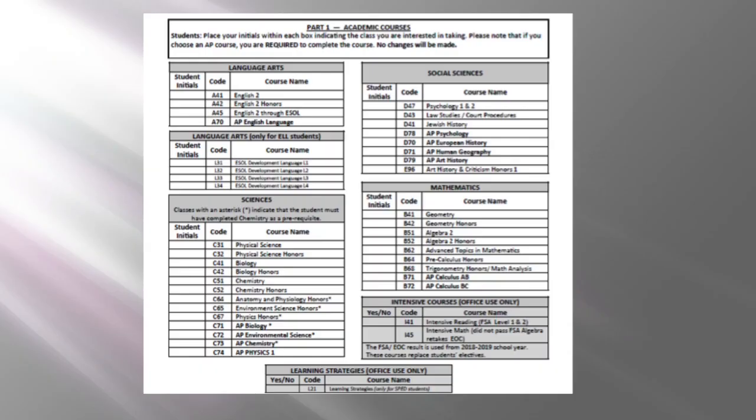Step 1: Choosing academic courses. You must select one course from each grade requirement subject area. You will write your initials for number one, English; number two, Math; number three, Social Science; and number four, Science.